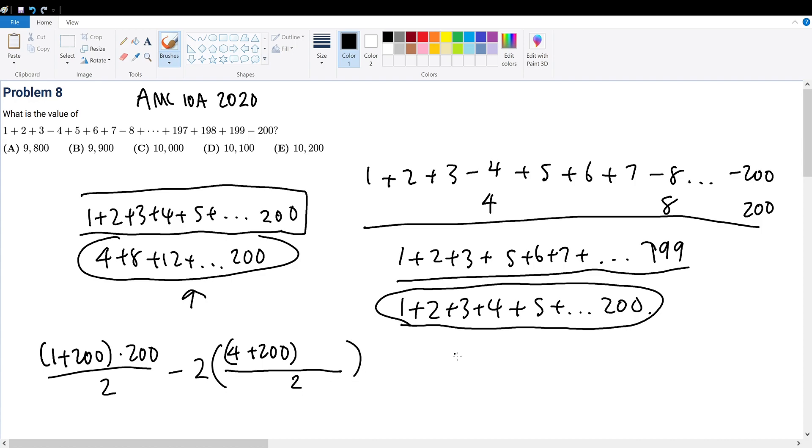So what is that n? Well, a sub n is equal to a sub 1 plus n minus 1 times d, where n represents the number of numbers, d represents the common difference. a n minus a 1 divided by d should give n minus 1. n will be equal to the last term minus the first term divided by d, which is the common difference, plus 1.